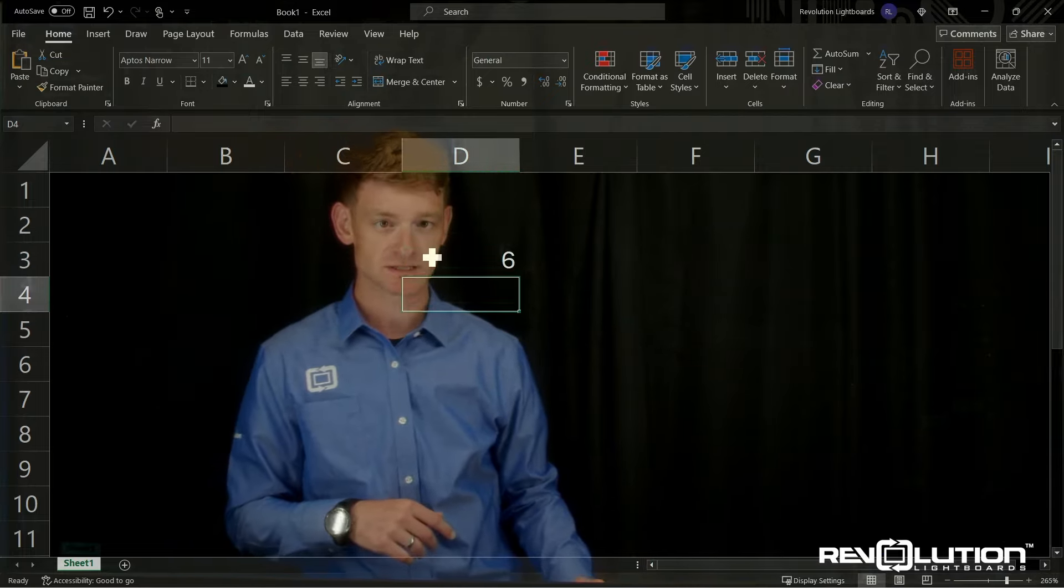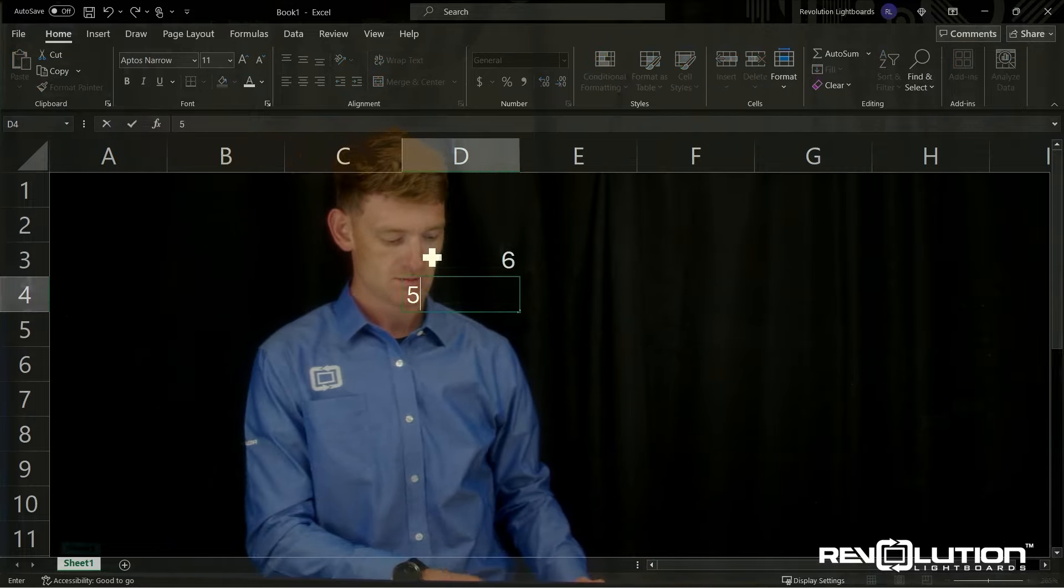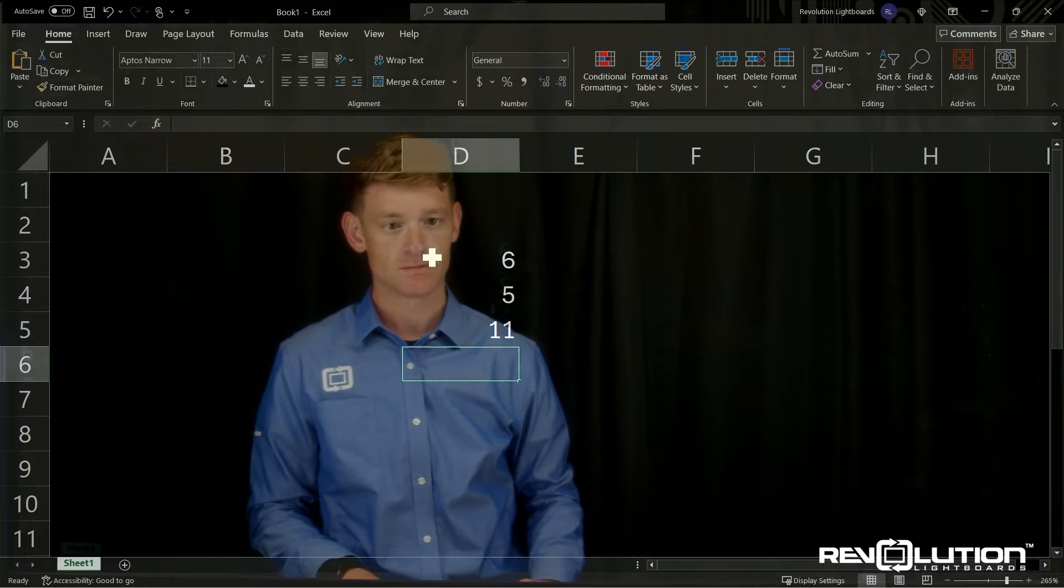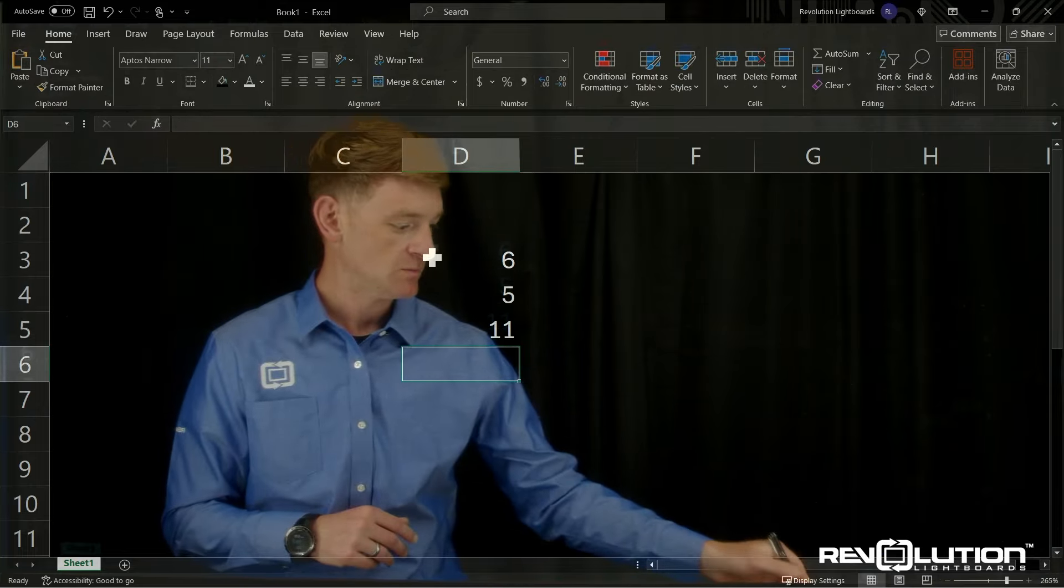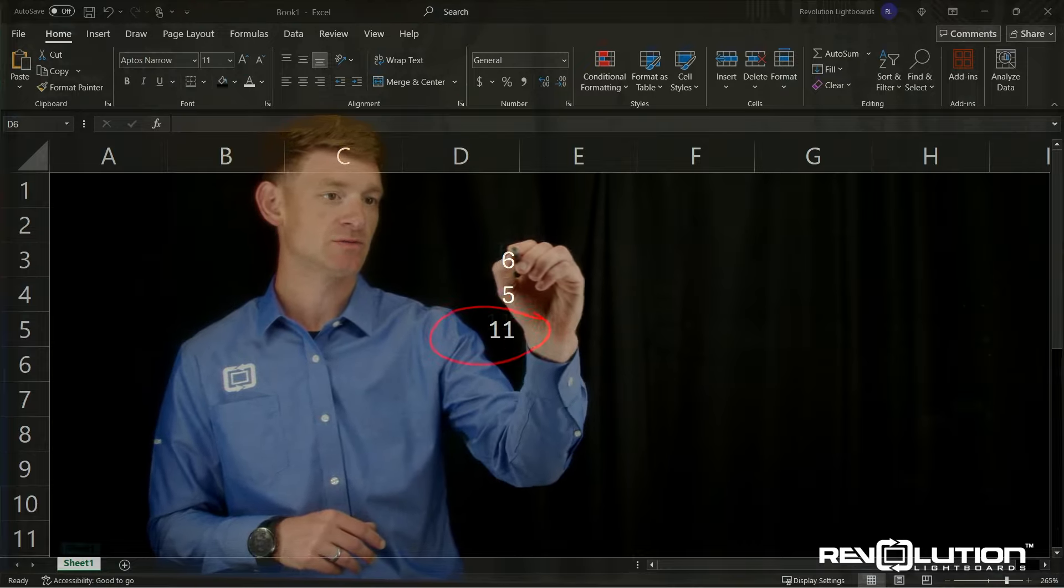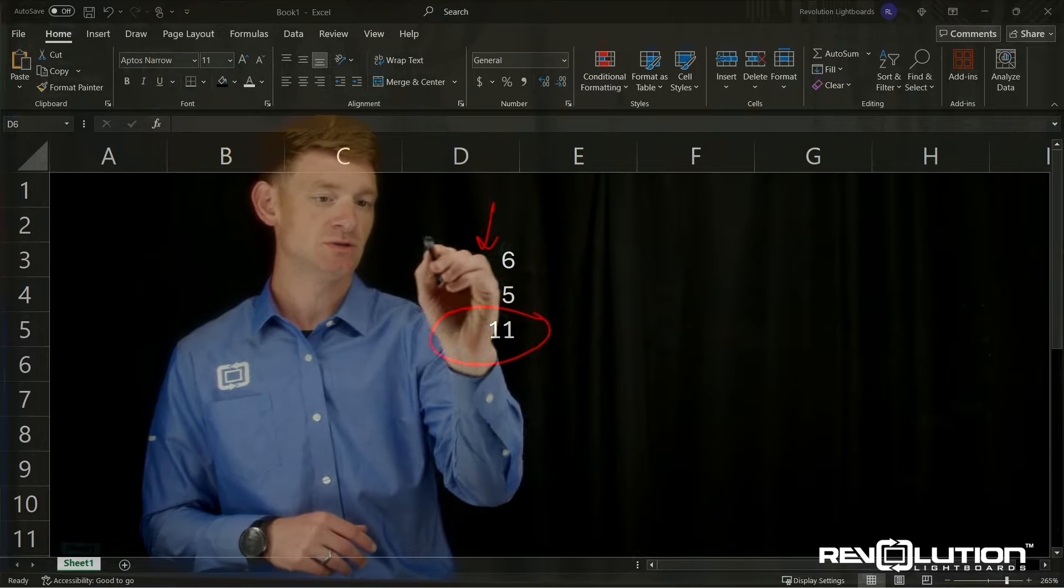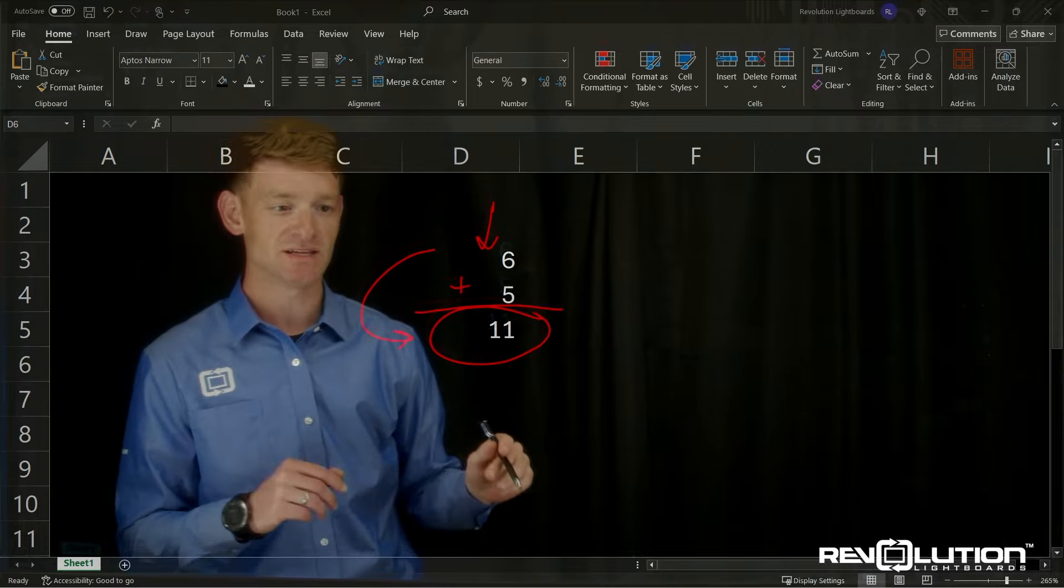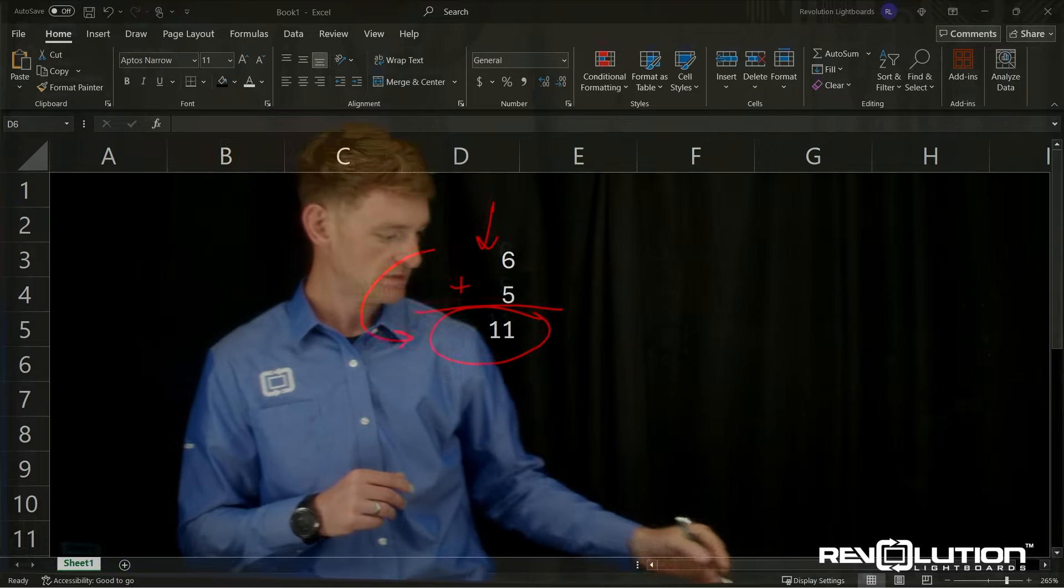So we can do 6, we can do 5, and let's go ahead and add those two together. And voila! We can even annotate and talk about how we got from here to here just by simply adding them. So that is a spreadsheet tool, Excel.